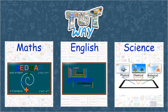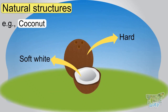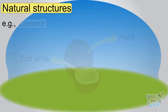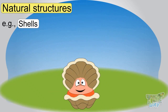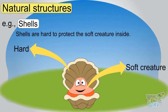Coconut is a natural structure which is hard from the outside and soft and white from the inside. Shells are a natural structure that are hard from the outside and have a soft creature inside. Shells are hard to protect the soft creature inside.